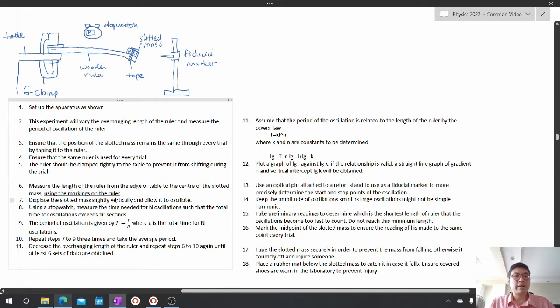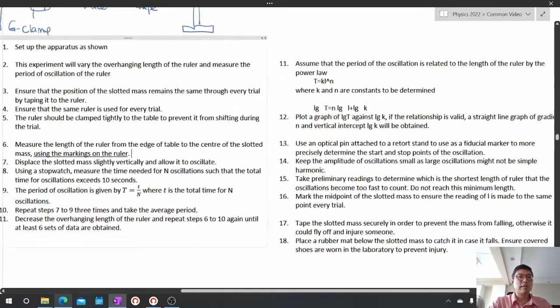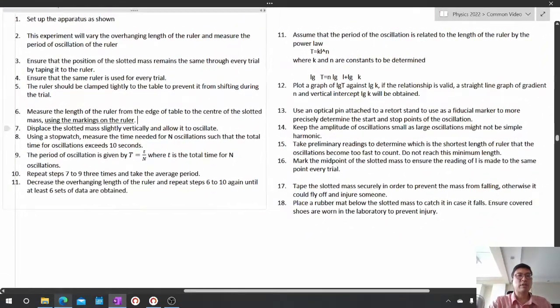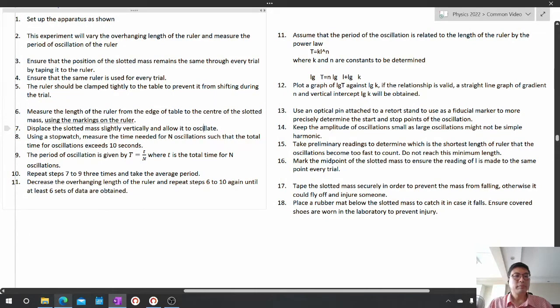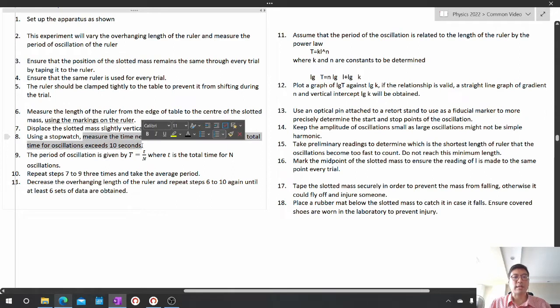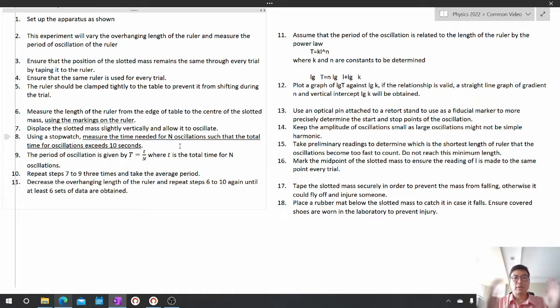Displace the slotted mass slightly vertically and allow it to oscillate. Here is the key important part of an oscillation experiment: for every oscillation experiment, you don't time just one oscillation. You must let it oscillate for a certain number of times so that the total time for oscillations exceeds 10 seconds.